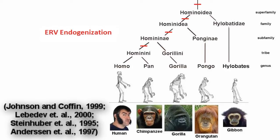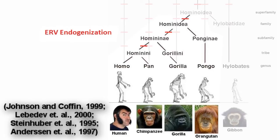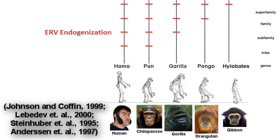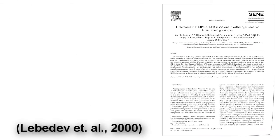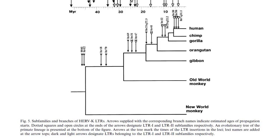Not only are there many ERVs shared among primates, but they're shared in hierarchical subsets of the whole. Each set falls within another set, giving an unbroken line of inheritance for each species. This pattern is called a nested hierarchy. These patterns further corroborate that the many species of primates share common ancestry, and necessitate a specific sequence of divergence from one ancestral species to the next. They are wholly inexplicable by the model of uncommon ancestry.